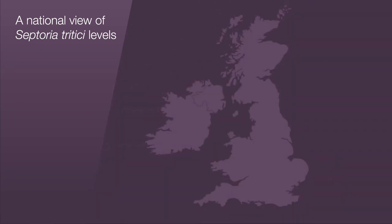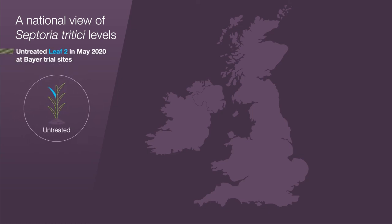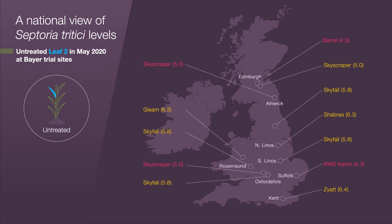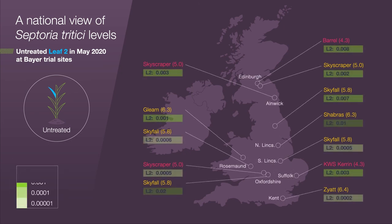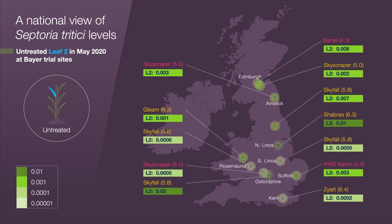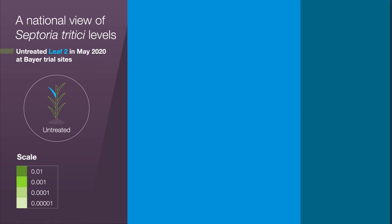The test has also opened up the possibility to get a visual snapshot of disease pressure across the country at a moment in time through the season. For example, in May 2020 we tested untreated leaf 2s from a range of varieties from some of our UK trial sites, and within a few days we were able to have a whole country view of septoria disease pressure.